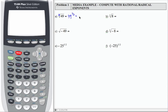what times itself is 49? Well, 7 times 7 is 49, so 7 is the square root of 49.